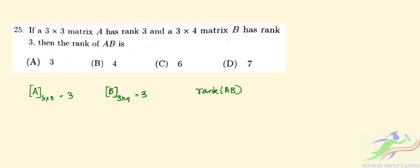So here you see that A is invertible. So we will have rank of AB is equal to nothing but the rank of B. So rank of B is equal to 3. So the rank of AB is equal to 3.